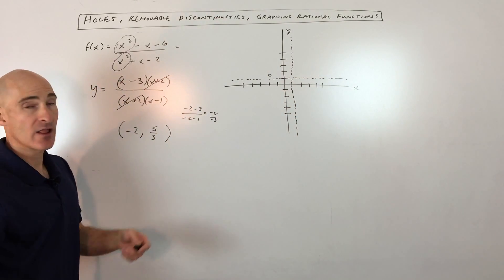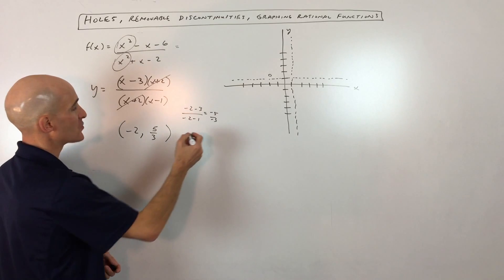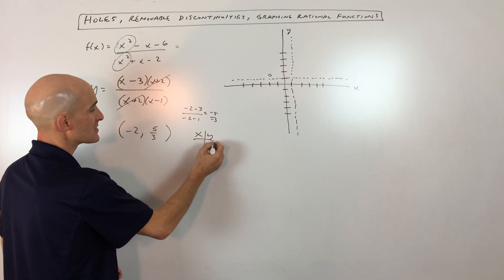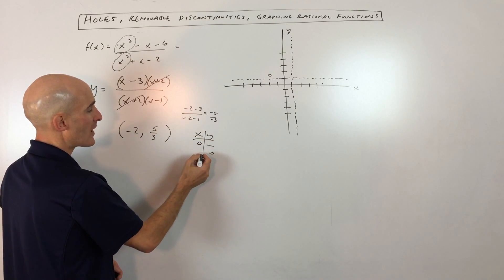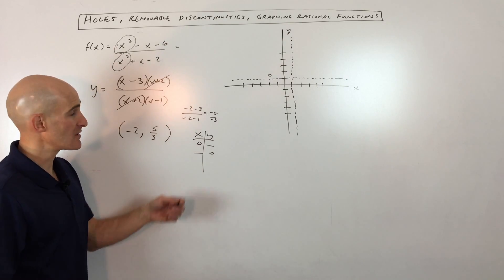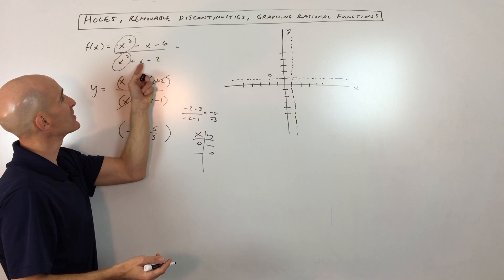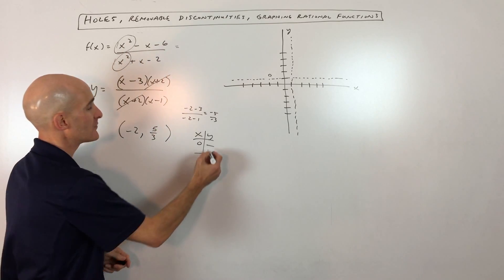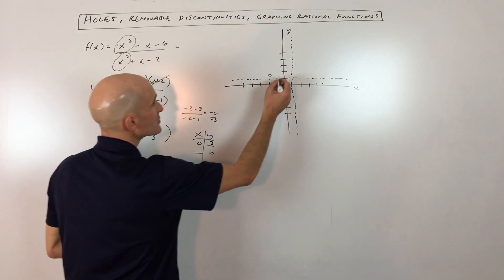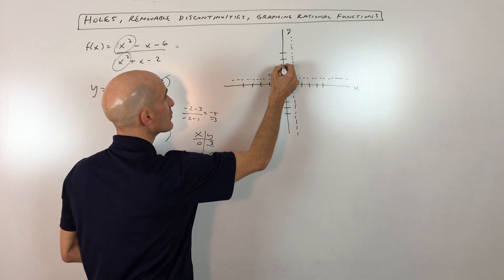Now the next thing is we're going to analyze the x-intercepts and y-intercepts. So I like just to make a little table like this. Set x to 0 to find the y-intercept. Set y to 0 to find the x-intercept. Keep it simple. So if you put 0 in for x, you can see these terms are going to cancel out, and we get negative 6 over negative 2, which is positive 3. So the y-intercept here is going to be 1, 2, 3 right there.